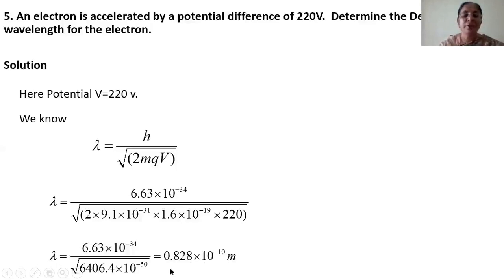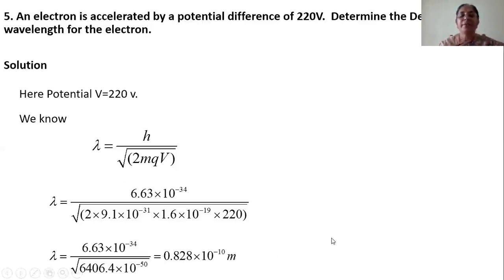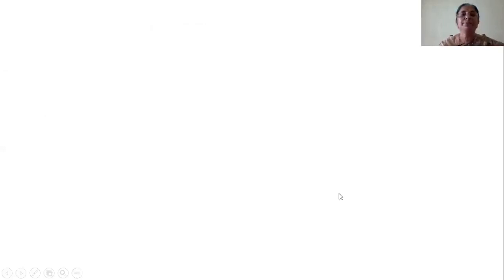Now, this is an electron — electron is very light, so wavelength is greater, giving 10 power minus 10 meter. In the previous problem, we calculated lambda for the alpha particle. Alpha particle is heavier, so the wavelength was something into 10 power minus 14 meter. So when the particle is heavier, wavelength will be lesser. When the particle is lighter, its wavelength becomes greater. This problem verifies the two properties: when the mass of the particle is less, wavelength will be more; when the mass of the particle is more, wavelength is smaller.